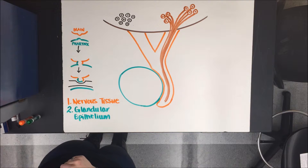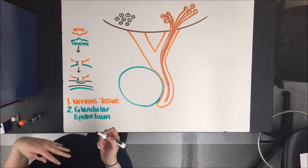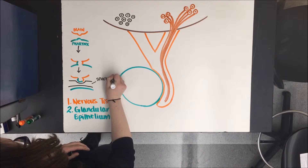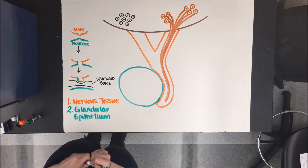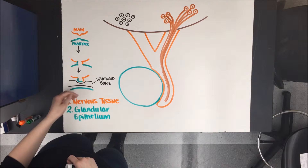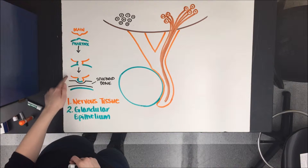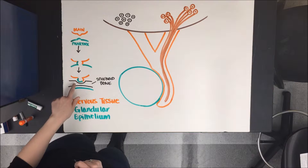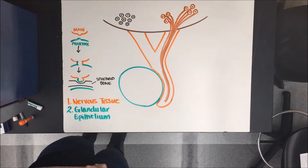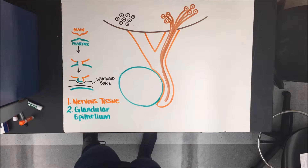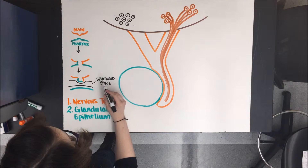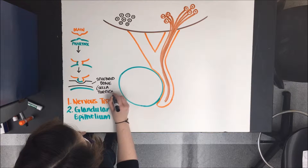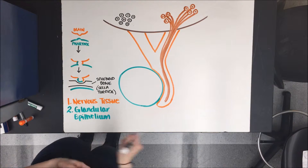Eventually the sphenoid bone comes in and separates the pharynx from the brain. The pituitary gland that forms between these two tissue types detaches from the pharynx and stays connected to the brain, which we'll talk about in a minute. The sphenoid bone develops in between. The little depression in the sphenoid bone that the pituitary gland rests in is known as the sella turcica — that's the space in which the pituitary gland rests in the sphenoid bone.